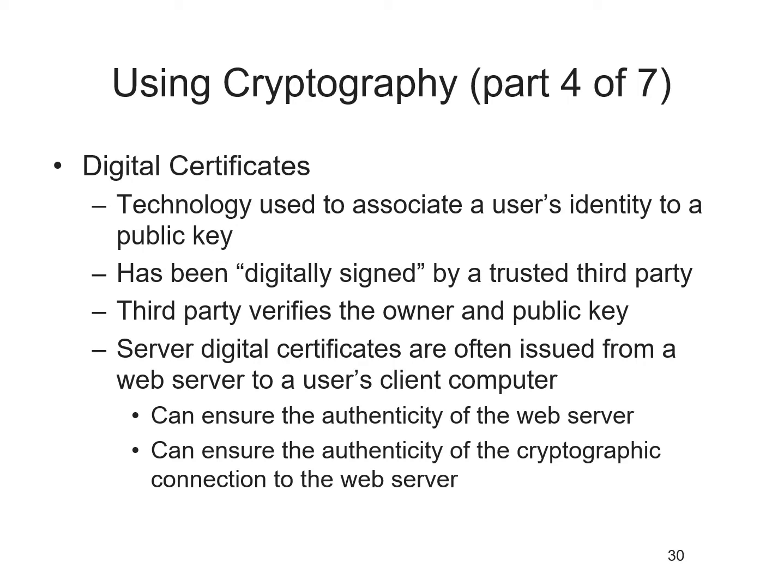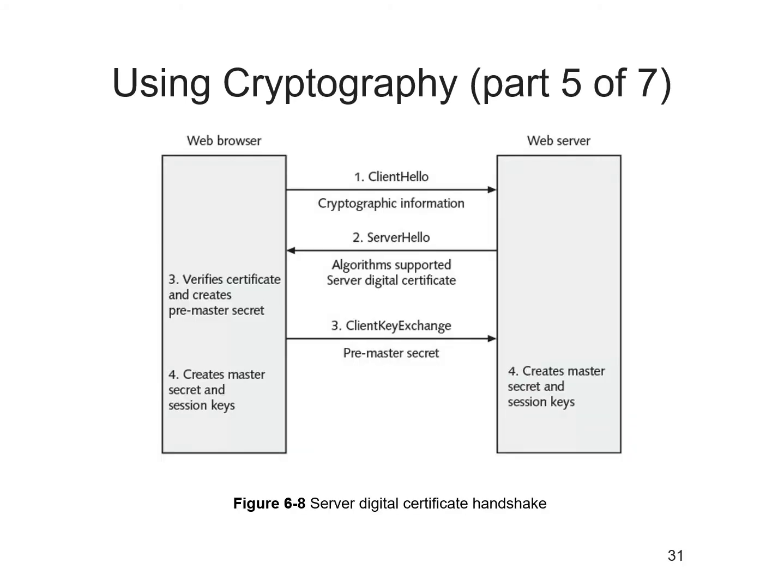When Alice receives the message with the digital certificate, she can check the signature of the trusted third party. If the signature was signed by a party she trusts, Alice can safely assume the public key in the certificate is actually from Bob. This allows Alice to verify Bob's claim that the key belongs to him and prevents attackers or impersonators from compromising the public key. Server digital certificates are often issued from a web server to the client to ensure authenticity and protect the cryptographic connection.